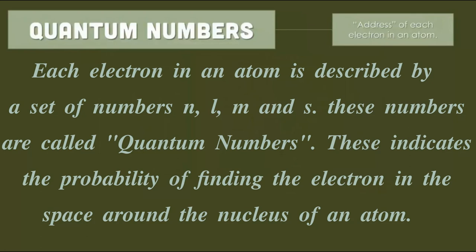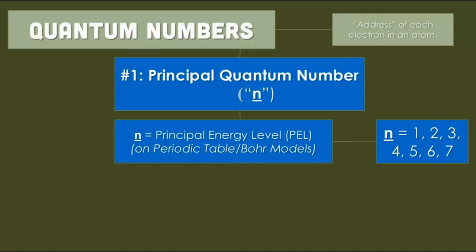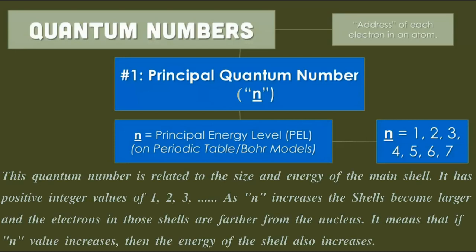First one is principal quantum number and it is denoted by n, also called as principal energy level. This quantum number is related to the size and energy of the main shell.